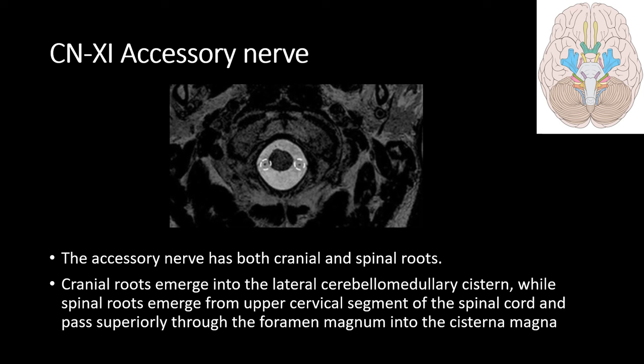The 11th, or the accessory nerve, has both cranial and spinal roots. Cranial roots emerge into the lateral cerebellomedullary cistern, while the spinal roots emerge from the upper cervical segment of the spinal cord and pass superiorly through the foramen magnum into the cisterna magna.